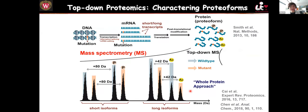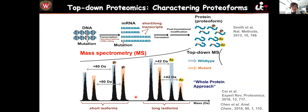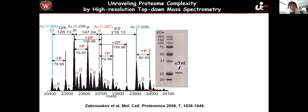Top-down proteomics is what I'm expert with. We use it to characterize proteoforms — a new term defining all protein products from the same gene, which may differ by alternative splicing isoforms or mutations. This is a really cool technology to study especially genetic inherited disease, which is caused by mutations. Some mutations cause disease, some don't, and even the same mutation can lead to different outcomes. Top-down proteomics can help us understand how mutations affect post-translational modifications, alternative splicing, and function.